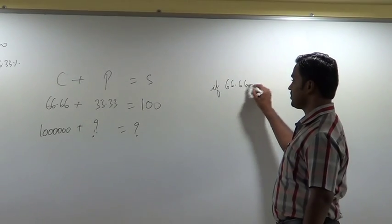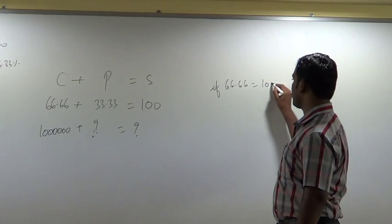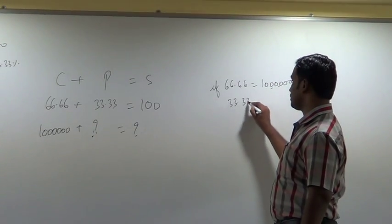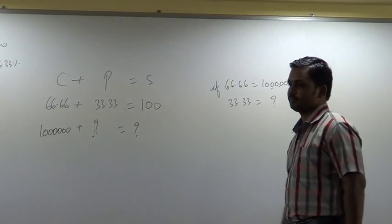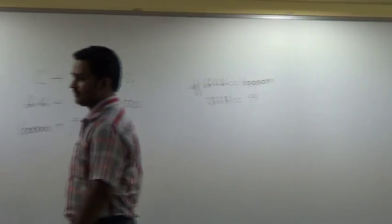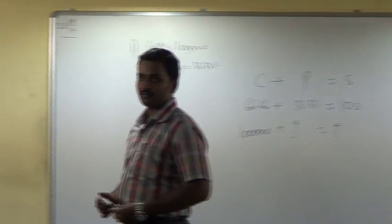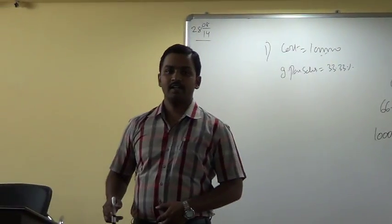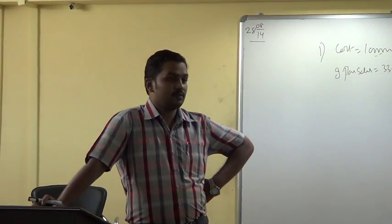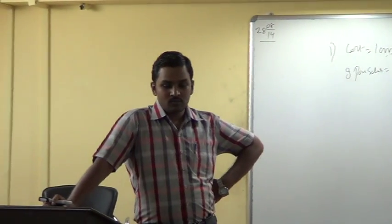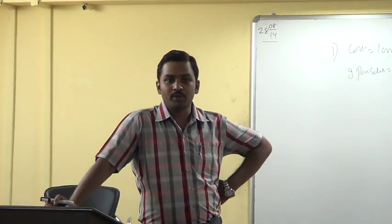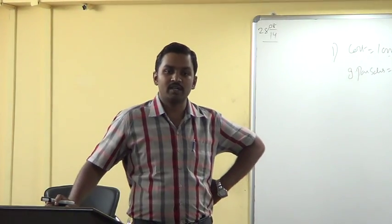If 66.66 is equal to 10 lakhs, then 33.33 is equal to exactly half — 5 lakhs. So we know the cost figure and the profit figure. Sales is equal to C plus P.